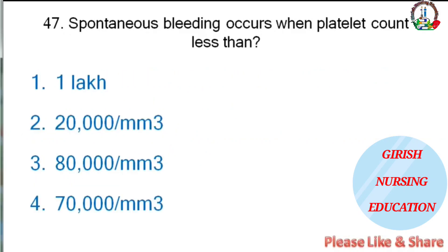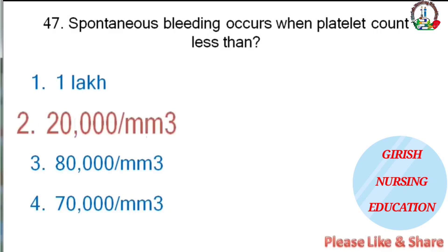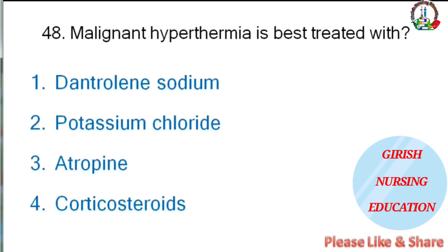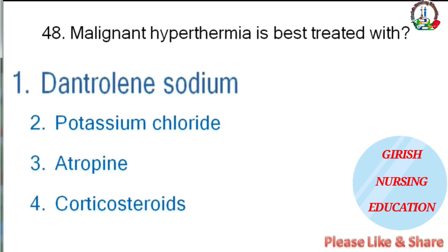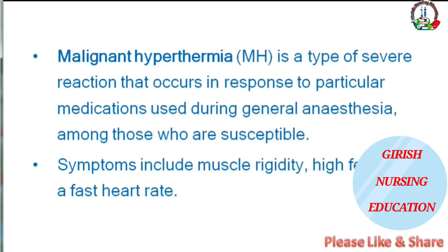Spontaneous bleeding occurs when platelet count is less than — 1 lakh, 20,000/mm³, 80,000/mm³, or 70,000/mm³? The correct answer is 20,000/mm³. Malignant hyperthermia is best treated with — dantrolene sodium, potassium chloride, atropine, or corticosteroids? The correct answer is dantrolene sodium. Malignant hyperthermia is a severe reaction occurring in response to medications used during general anesthesia in susceptible individuals.